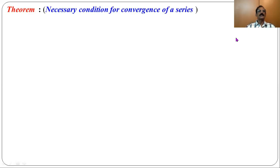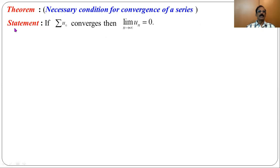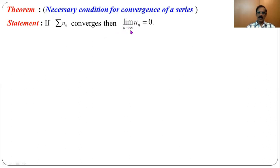Let us state and prove a necessary condition for convergence of a series. If the series Σuₙ converges, then the limit of uₙ as n tends to infinity equals 0. That is, for every convergent series, the limit of the nth term of the series must be 0.